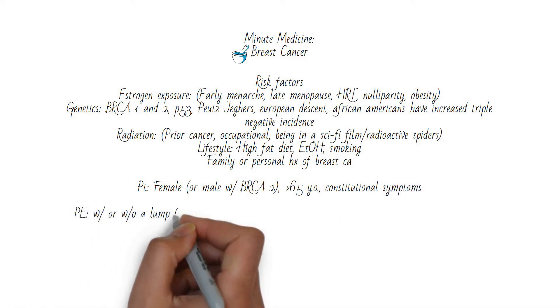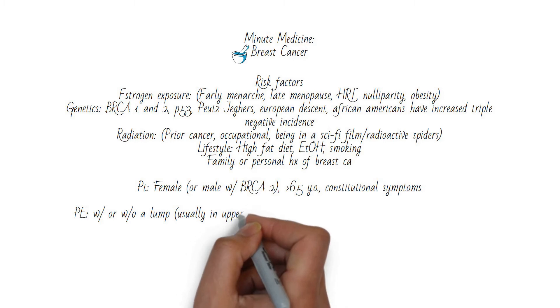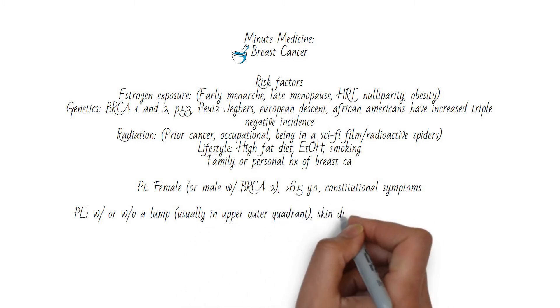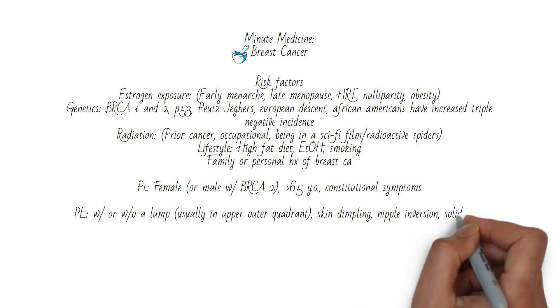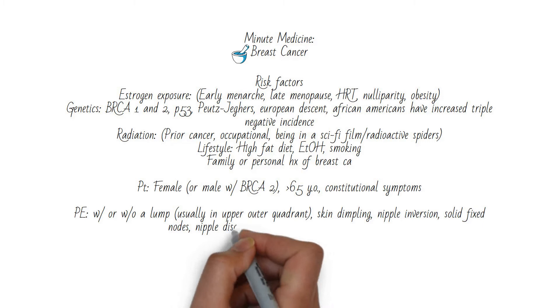The patient will be a female older than 65 or a male with a BRCA2 mutation with constitutional symptoms. On exam, there may or may not be a mass. The most common area for a mass is the upper outer quadrant.